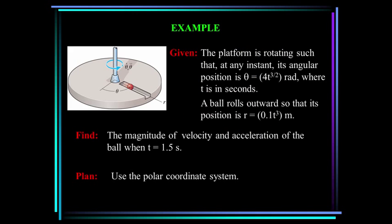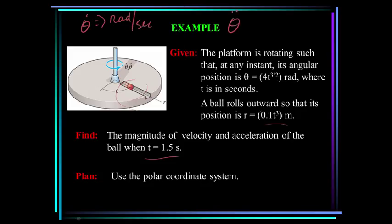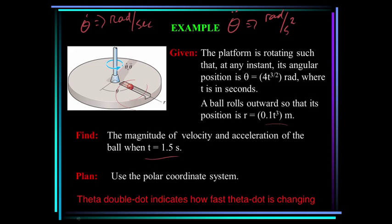Let's do an example. This platform is rotating such that at any instant its angular position is theta equals 4 times t raised to the 3/2 power, in radians, where t is in seconds. Also, a ball is rolling outward in the slot and its position is defined by r equals 0.1t cubed meters. Find the magnitude of velocity and acceleration of the ball when t equals 1.5 seconds. Note that theta-dot is in radians per second — it describes how fast theta is changing — and theta-double-dot is in radians per second squared, describing how fast the angular velocity is changing.